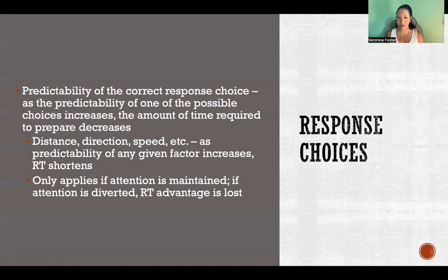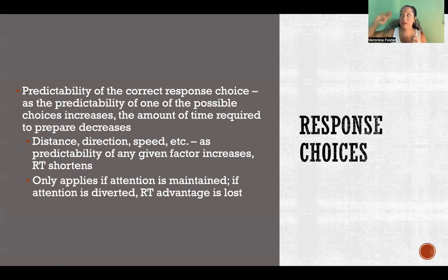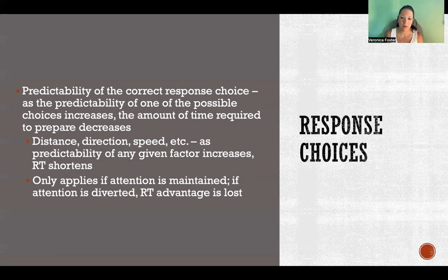With 50-50 odds, it'll take longer to choose the correct response for the less-expected option. But if they are correctly predicting the response choice, reaction time and preparation are reduced when they can reliably predict distance, direction, speed, and so on — but only as long as attention and focus is maintained on the task. If the mind wanders or they're distracted, they lose that advantage and every response choice is treated equally again.